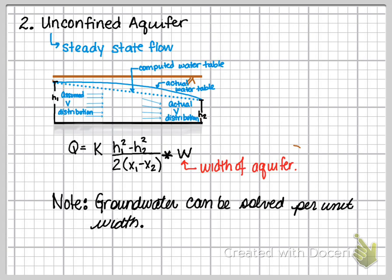Now, if we wanted to get a unit discharge, we do not need to include the width term. But in this equation, I've included the width so that you can always calculate the flow rate, and not the flow rate per unit width. But please note, in groundwater, many times we calculate flow rate per unit width.